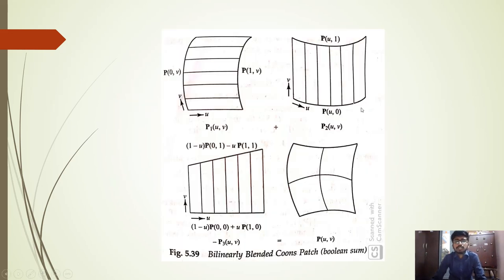This is the diagrammatic representation of the bilinearly blended Coons patch seen earlier in matrix form. P₁(U,V) is shown, then P₂(U,V). When we add these two, we get some extra terms that need to be eliminated. P₃(U,V) is the correcting surface. Finally we obtain P(U,V), the bilinearly blended Coons patch.